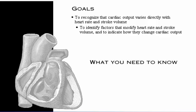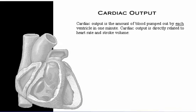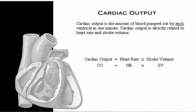Here's what you need to know: heart anatomy and the cardiac cycle. To see definitions of terms, click the bold red words. Cardiac output is the amount of blood pumped out by each ventricle in one minute and is directly affected by heart rate and stroke volume. Shown as an equation: cardiac output equals heart rate times stroke volume.